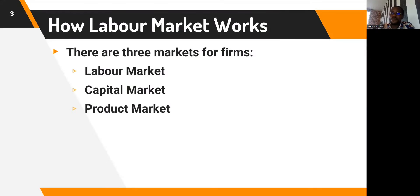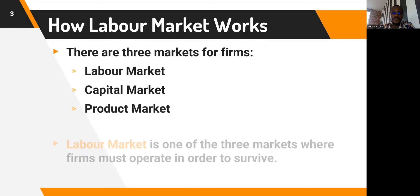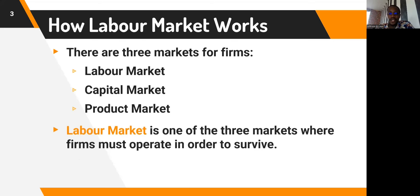There are three markets for firms: the labor market, capital markets, and the product market. The labor market is where firms make decisions on how many workers to employ, and workers also make decisions on whether or not they want to offer themselves for hire. This is one of the three markets where firms must operate in order to survive, because hardly will firms be able to do away with labor as far as production is concerned.